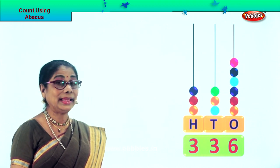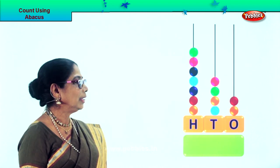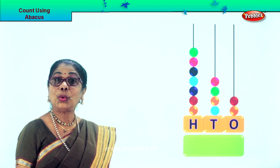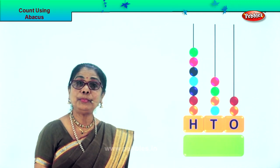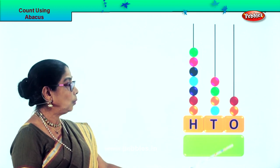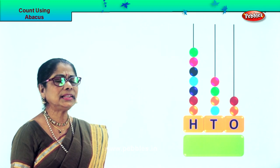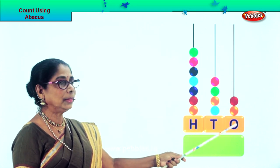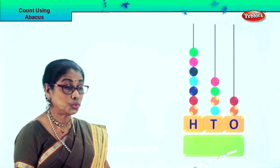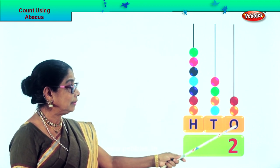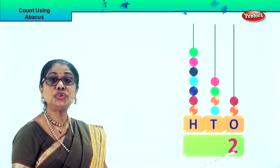Good. Now let's take another sum. Let's go to the 1s — count the beads and put it in the 1s place: 1, 2. Just 2 beads in the 1s place, so we put down number 2. In the 1s place we have 2, so you write down 2.